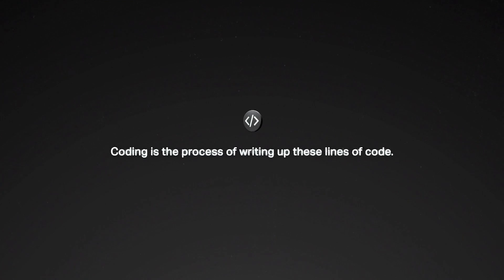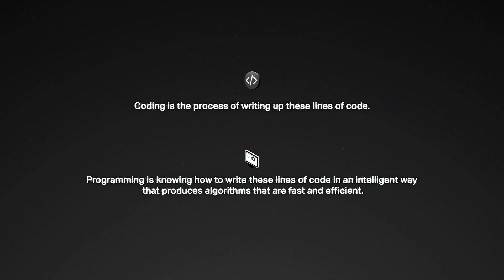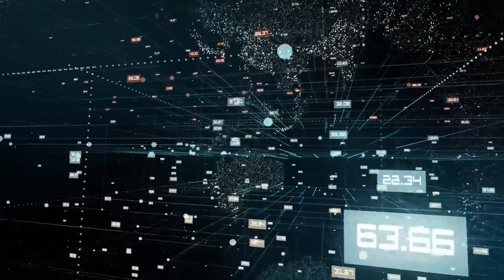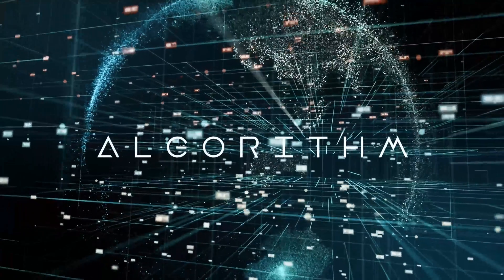In the case of programming, it's a series of logical steps — lines of code that you're executing in a particular order to turn input data in some data structure into some output data, which will also be in some sort of data structure. Now that we understand what data structures and algorithms are, why are these so important? What we just described is literally what programming is. Programming is simply about taking in data, doing something with that data, and getting something out of it. The computer has a finite amount of resources, so we want to make our algorithms as fast and efficient as possible.